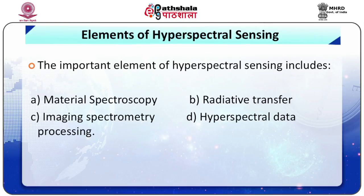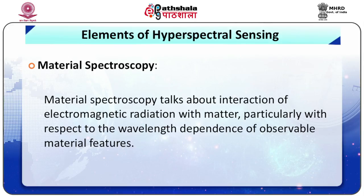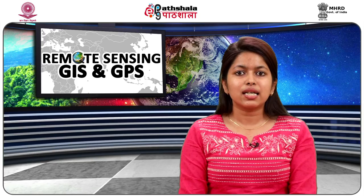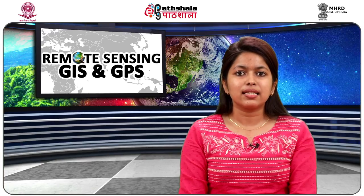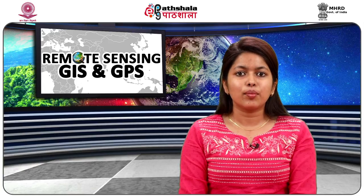We will now discuss the various elements of hyperspectral remote sensing. The important elements include: (A) material spectroscopy, (B) radiative transfer, (C) imaging spectroscopy, and (D) hyperspectral data processing. Material spectroscopy talks about the interaction of electromagnetic radiation with matter, particularly with respect to the wavelength dependence of observable material features, and provides the physical basis of hyperspectral sensing in terms of the direct relationship between observable material spectral features and the inherent compositional characteristics.